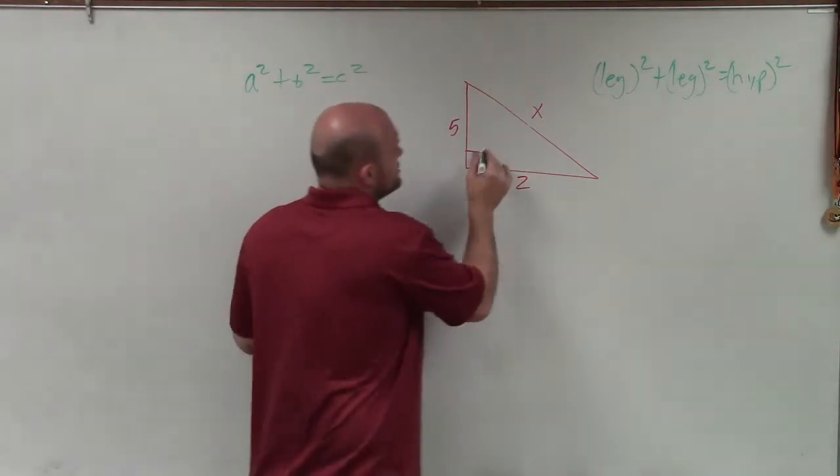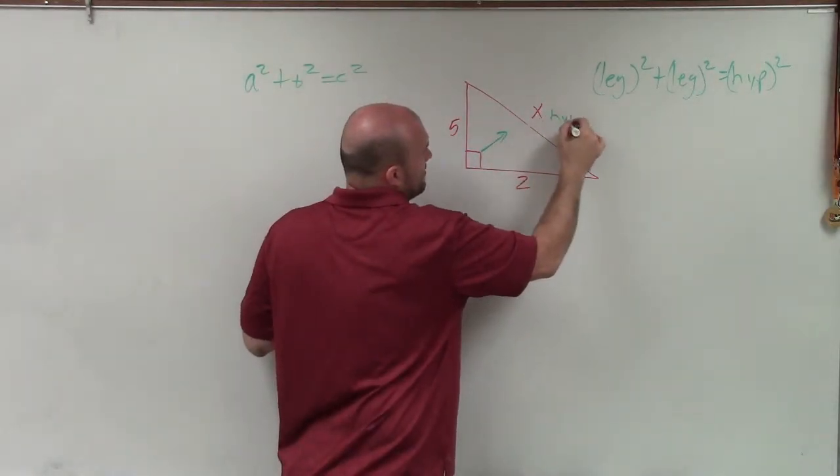So I automatically go to my right angle and say, all right, that's my hypotenuse. And then these are my two legs.